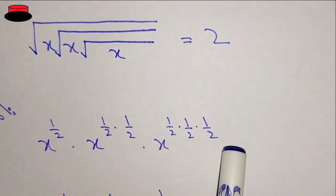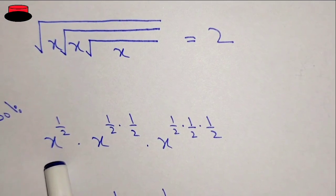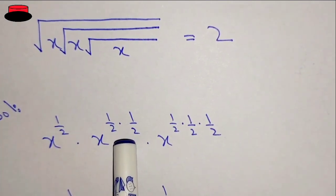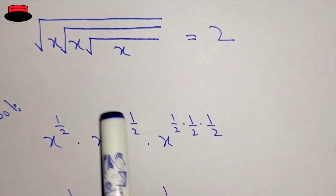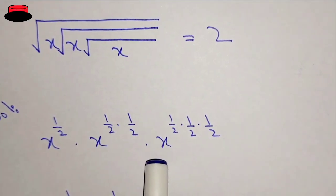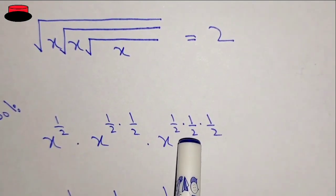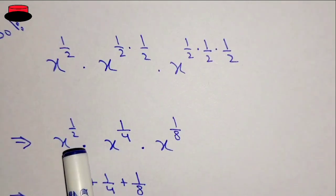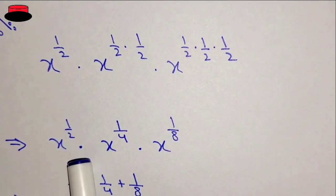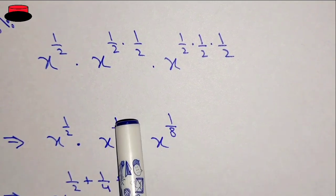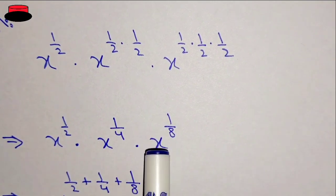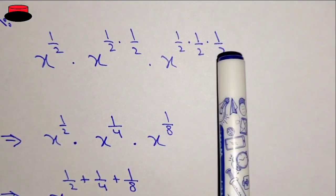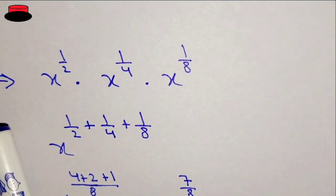So we are writing over here x power one upon two for this value, x power one upon two into one upon two for this value, and x power one upon two into one upon two into one upon two for this value. Now we will solve it: x power one upon two, into x power one upon four, into x power one upon eight. Two into two is four, four into two is eight.